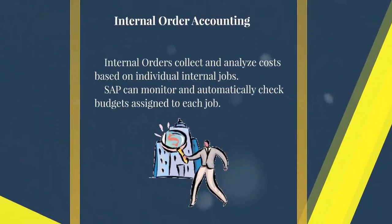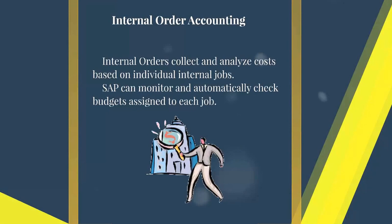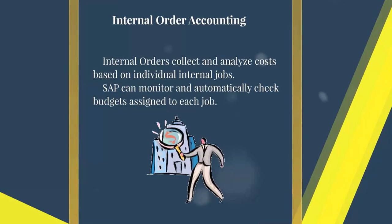Internal order accounting collects and analyzes costs based on individual internal jobs — meaning there will be a specific project or job for which we use an internal order. A cost center is like a permanent entity, while an internal order is temporary. For example, if we want to build an office wall or purchase office furniture, we don't want a specific cost center — that would be an internal order lasting maybe one month or 15 days. SAP can monitor and automatically check budgets assigned to each job.